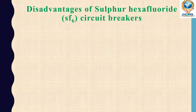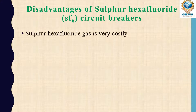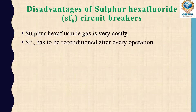Now if we see the disadvantages of the SF6 circuit breaker: the first disadvantage is that sulphur hexafluoride gas is very costly - we have to spend more money to purchase this gas. The second disadvantage is that SF6 gas has to be reconditioned after every operation.